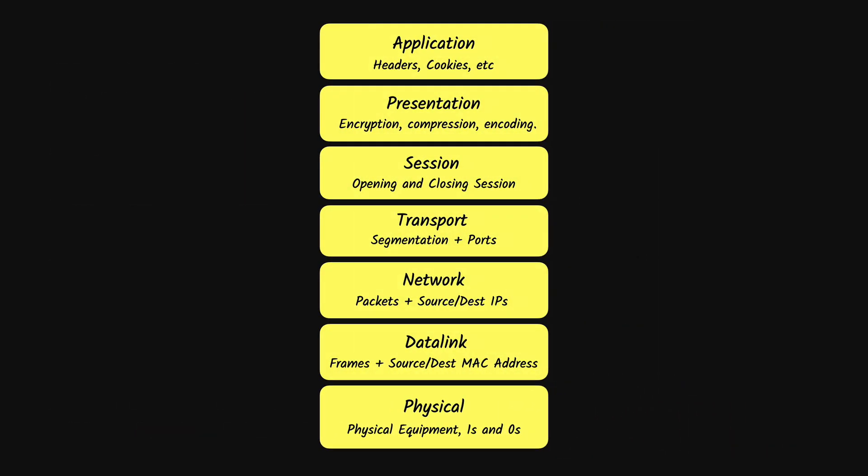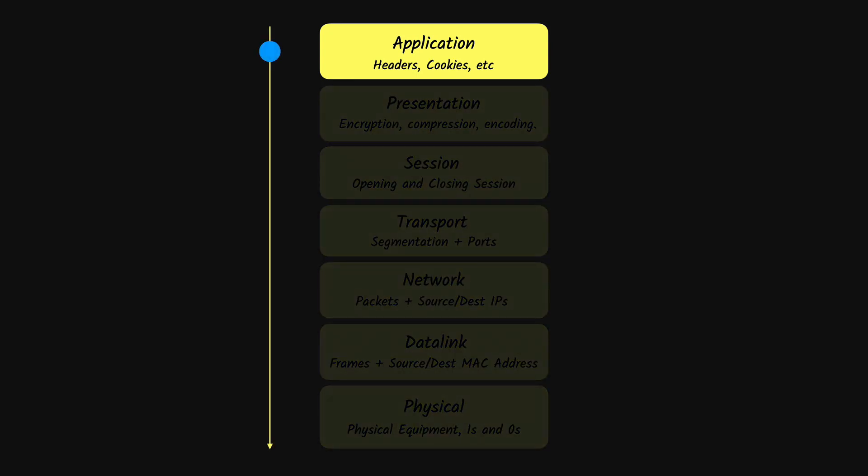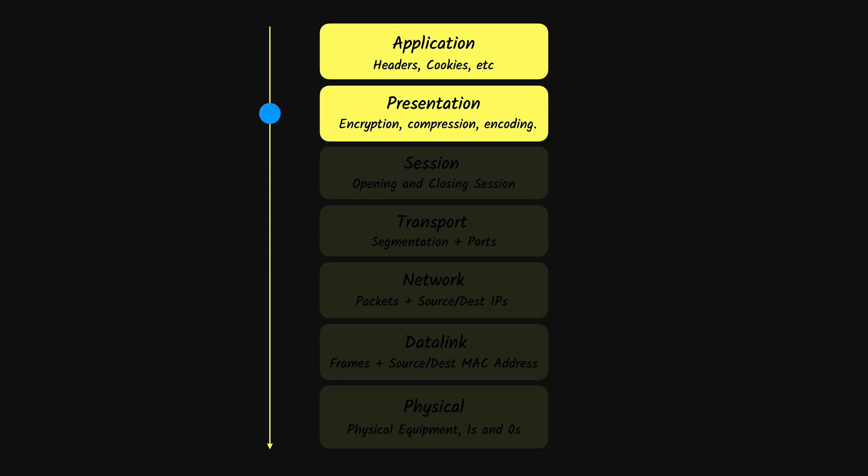Now that we know the OSI model, its layers, and the responsibilities of each layer, let's summarize it all with an example. Say you are sending a message on Slack. When you hit enter, Slack passes the message to the application layer, which picks the HTTP protocol and prepares the request. It then passes the data to the presentation layer, which — if you're using HTTPS — will encrypt and compress the data, then pass it to the session layer, which sets up a session.